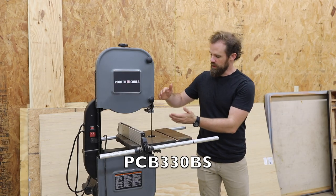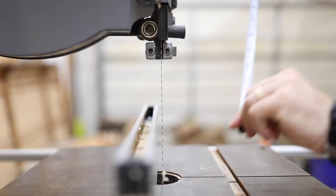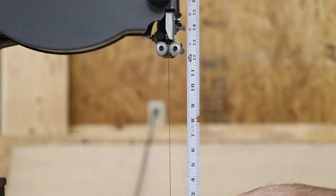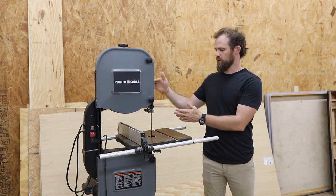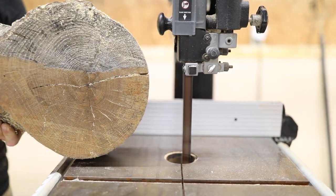What this is going to allow me to do is change the resaw capacity from six inches to about 12 inches. This will allow me to cut thicker pieces of wood through this machine.